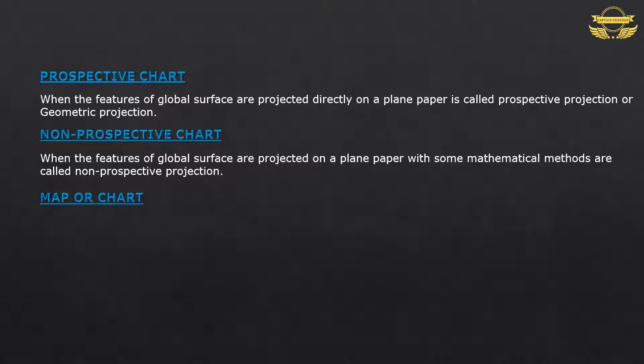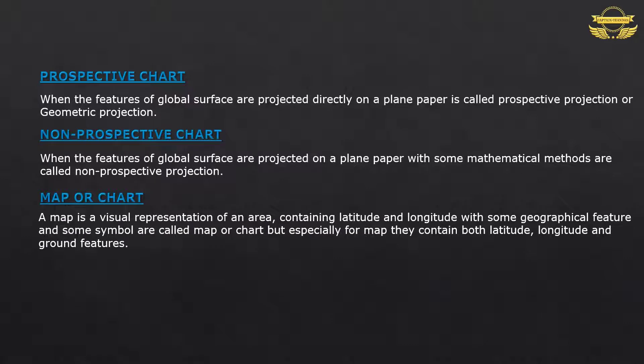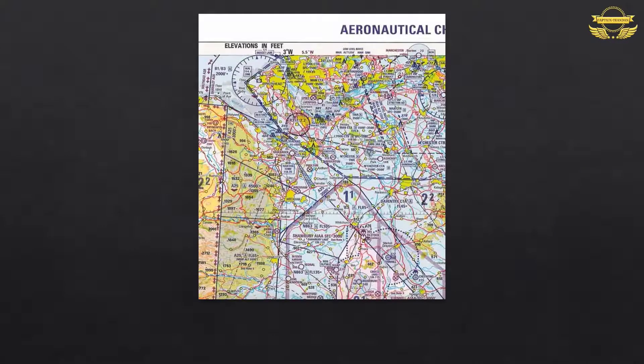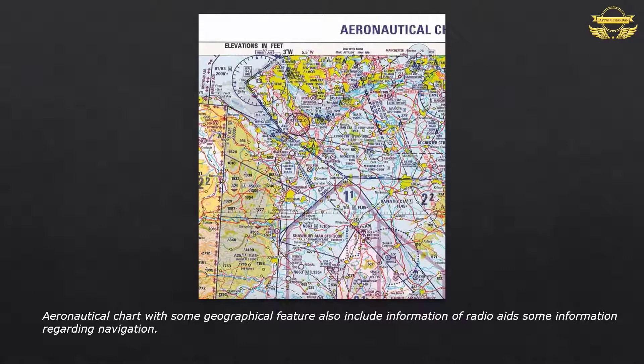Map or Chart: A map is a visual representation of an area containing latitude and longitude with some geographical features and symbols. Maps contain both latitude, longitude and ground features. Aeronautical charts with geographical features also include information about radio and navigation.